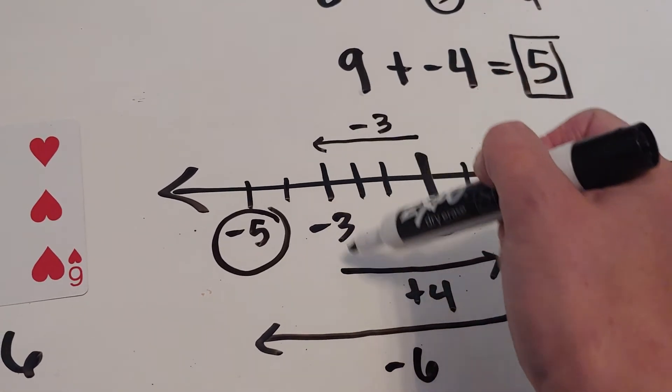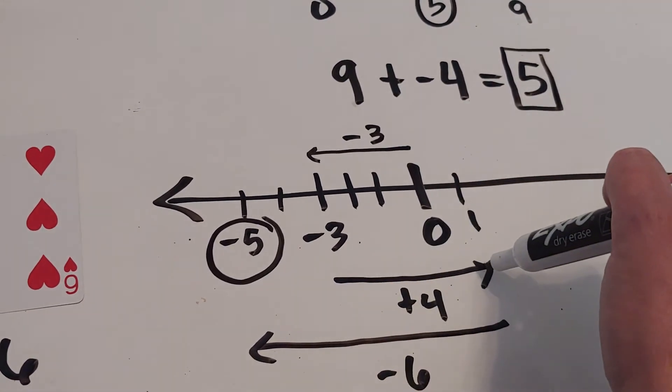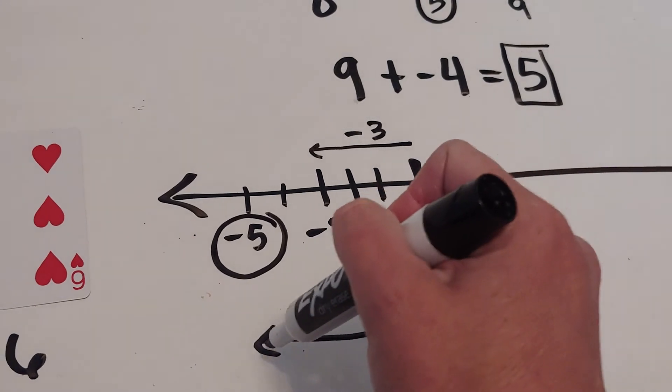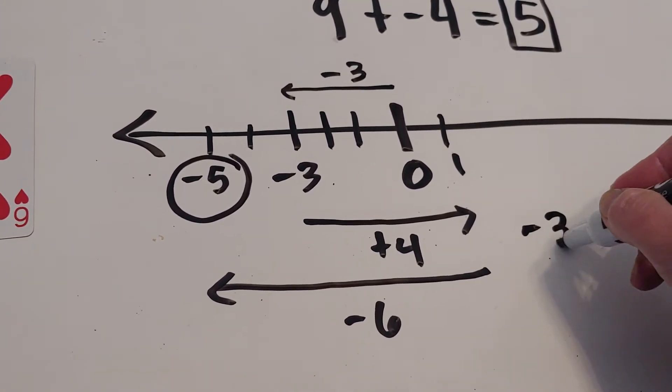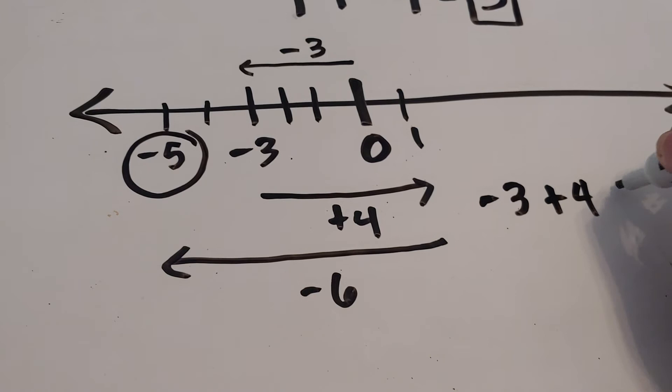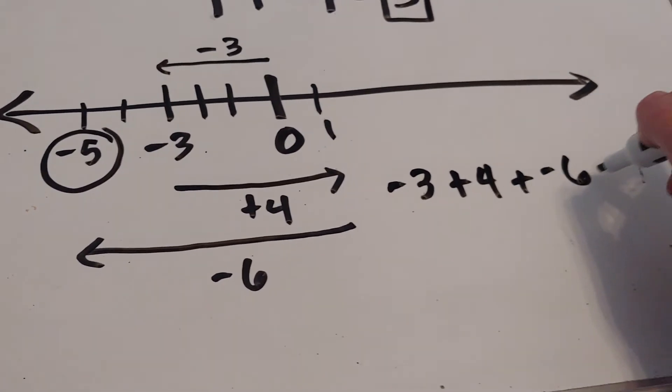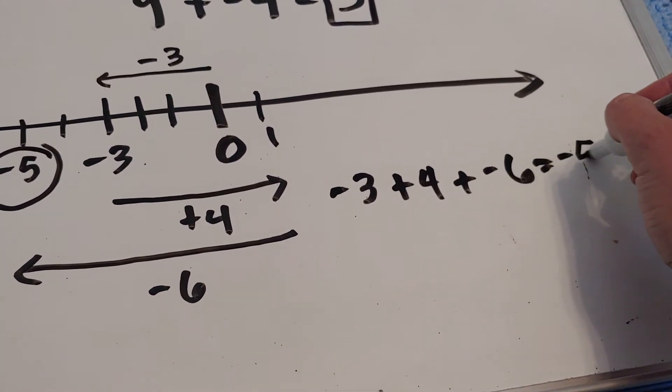So my equation is negative three plus four plus negative six, which equals negative five.